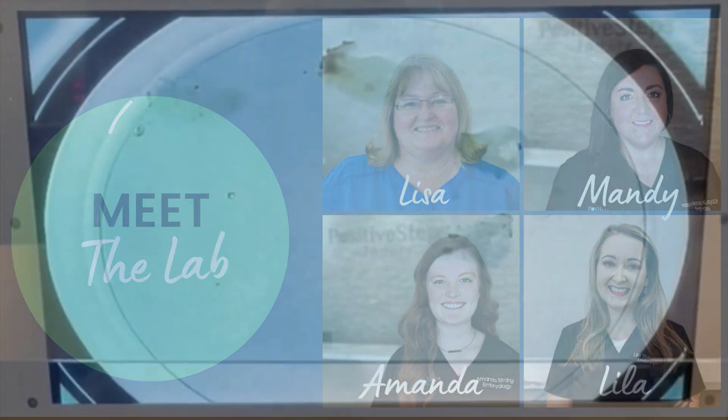First, we find the eggs in the follicular fluids that are taken from the ovaries during the egg retrieval, which is a minor surgical procedure. The egg is the small dark circle that you see.